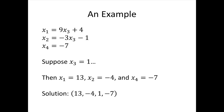We can choose any value of x3. For example, if we take x3 equal to 1, then x1 turns out to be 13 — that's 9 times 1 plus 4. x2 turns out to be negative 4 — that's negative 3 times 1 minus 1. And x4 is negative 7. So that gives us the solution (13, −4, 1, −7). If we go back to our original system and plug those four numbers in for our four variables, we can verify that it really is a solution.